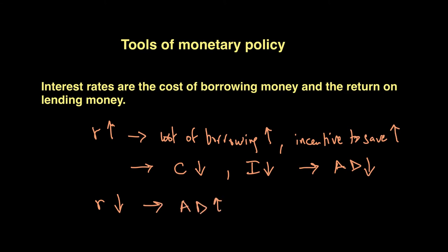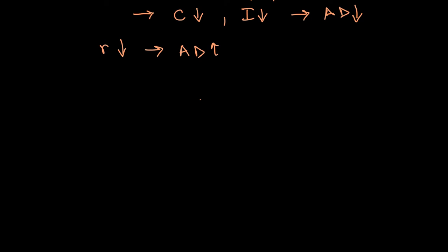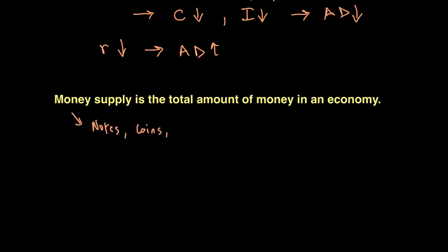Another tool is money supply — simply the total amount of money in an economy. This can be taken as notes and coins or any easily accessible accounts like current accounts in banks which do not give you interest. Money supply is a little difficult to manage in an economy, and that's why governments normally use interest rate as the primary tool.